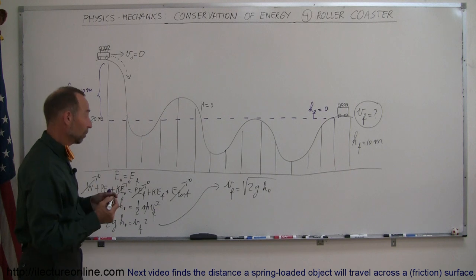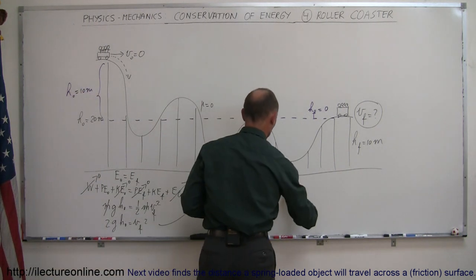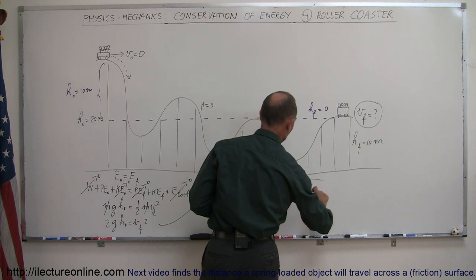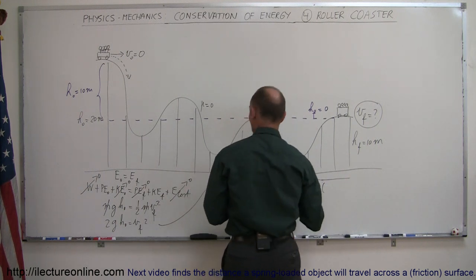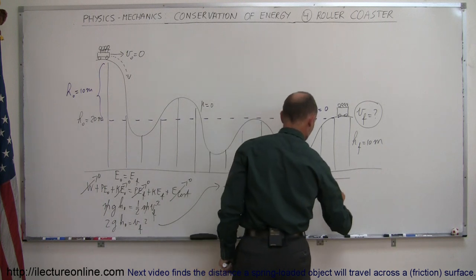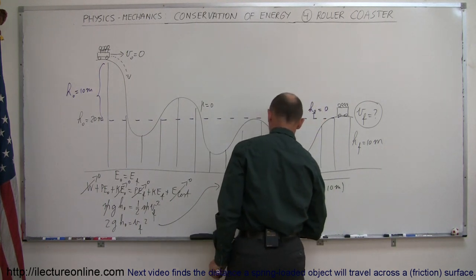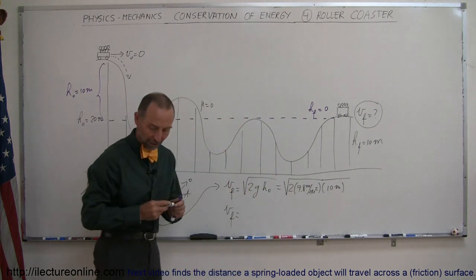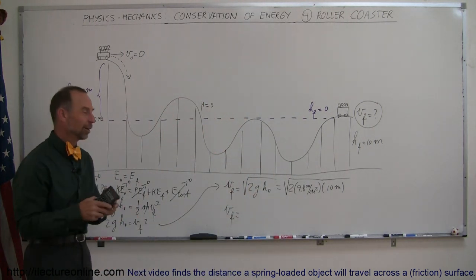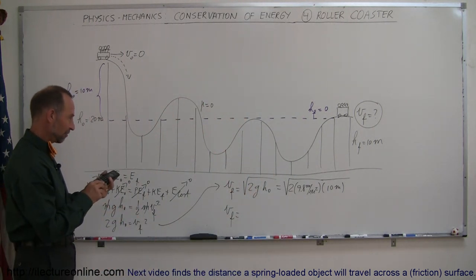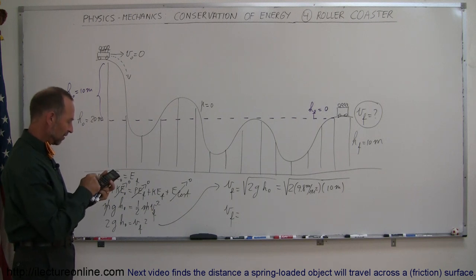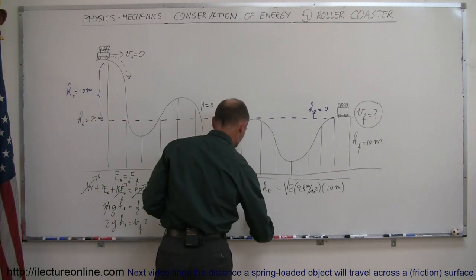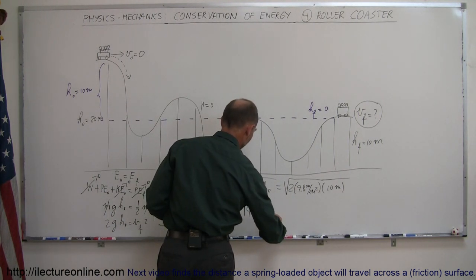Now we just plug in the numbers so this is equal to the square root of 2 times 9.8 meters per second squared times the height difference 10 meters and that will tell us how fast the roller coaster will be moving when it gets to that point, of course ignoring friction. So we have 196, take the square root of that is exactly 14, so that would be 14 meters per second.